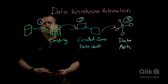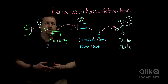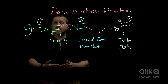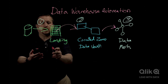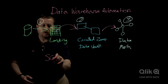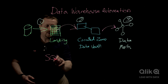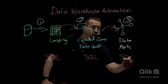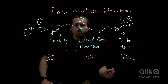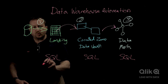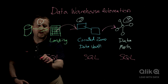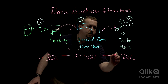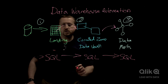So using data warehouse automation tools from folks like Qlik, we can actually generate, model, and create SQL for each one of these zones. Without writing any code, we can use visual tools, and we can also automate how the data flows from one zone to another.